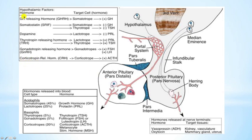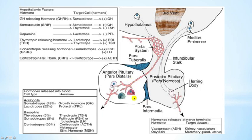The hypothalamic releasing factors are released from the hypothalamus to stimulate or inhibit the basophils and acidophils. The first is growth hormone releasing hormone (GHRH), produced in the arcuate nucleus. It goes through the portal circulation to the somatotrophs — a population of the acidophils — and stimulates the production of growth hormone.